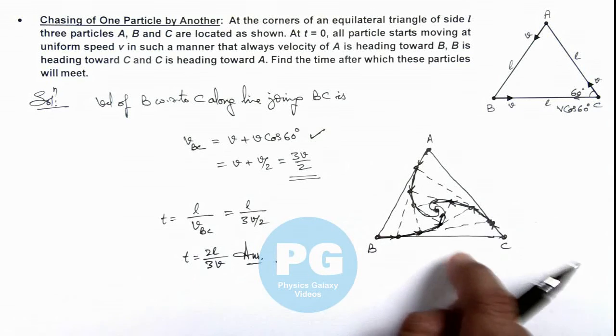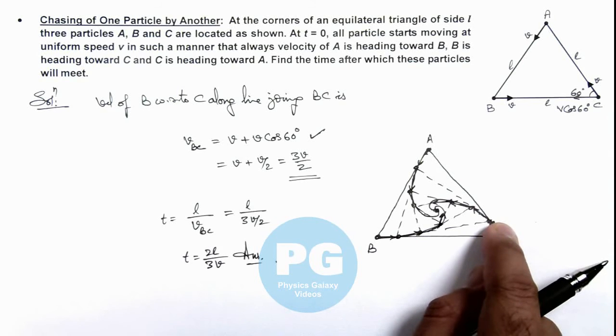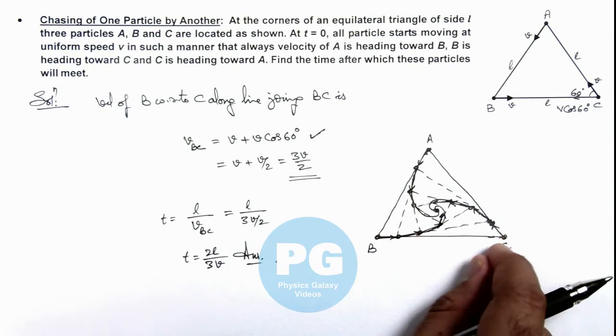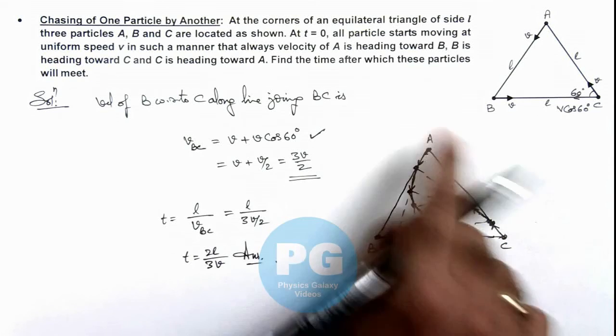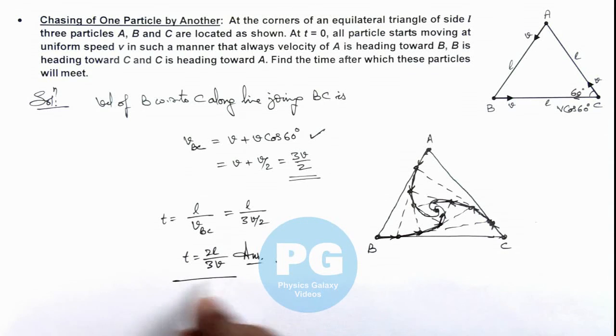So here we can say at every instant, a particle is heading towards the other particle and its relative speed is 3v by 2. So the whole distance l is covered by one particle with respect to another at a speed 3v by 2. So this is the time taken by the particles when they converge at centroid of the bigger triangle.